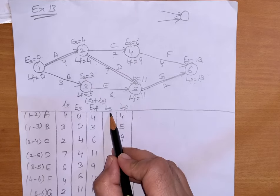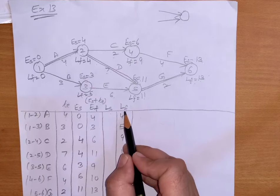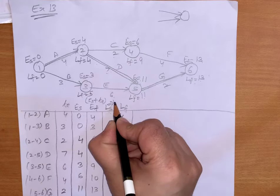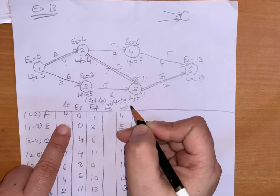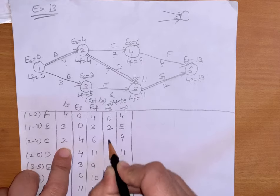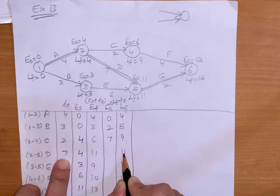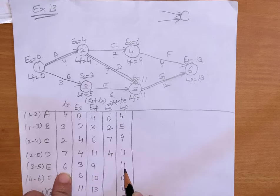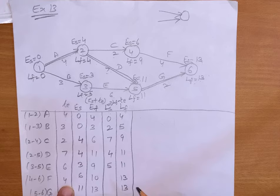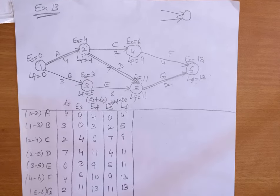Now, how to find out latest start: the formula is latest finish minus expected time. So: 4 minus 4 equals 0; 5 minus 3 equals 2; 9 minus 2 equals 7; 11 minus 7 equals 4; 11 minus 6 equals 5; 13 minus 4 equals 9; 13 minus 2 equals 11. So we have now calculated latest start and latest finish.